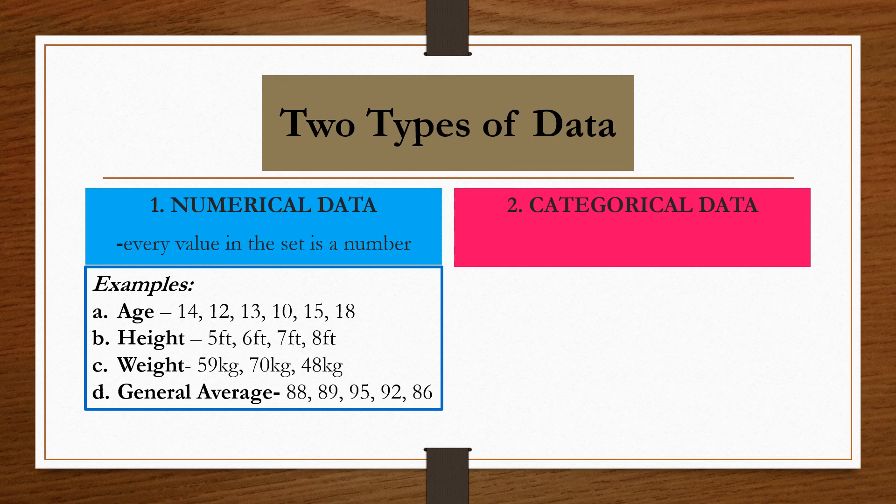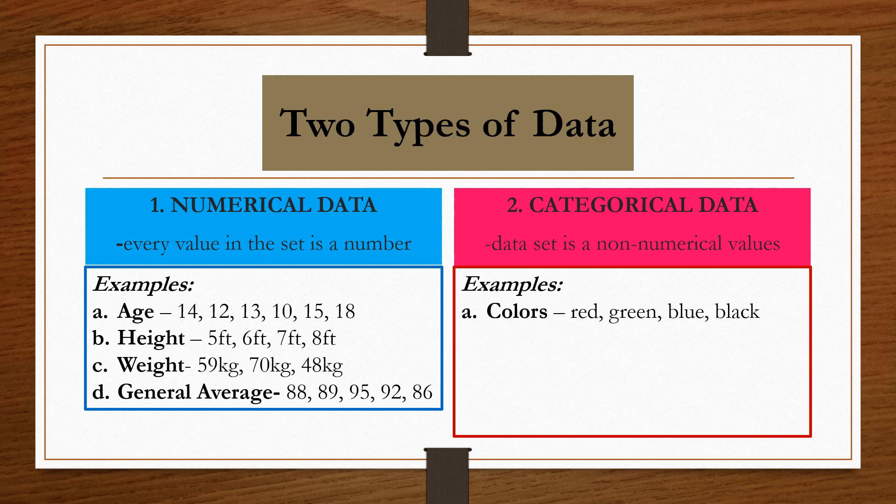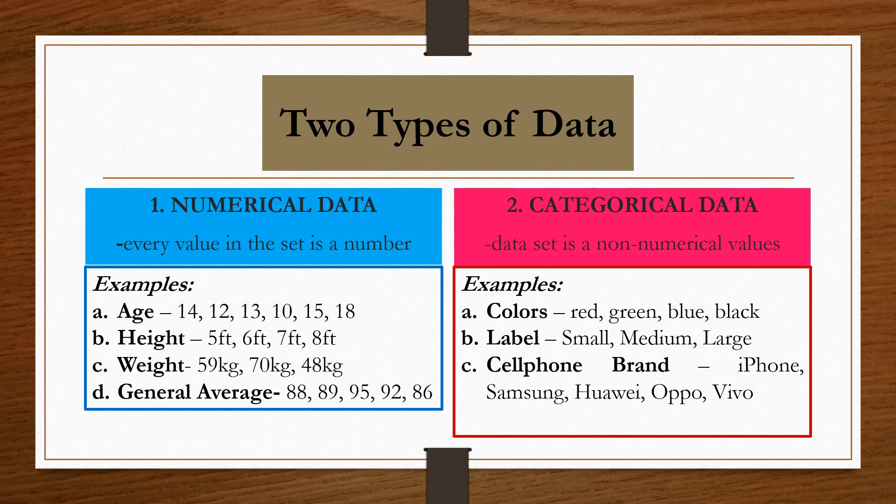The other type of data is categorical data. This data set is non-numerical. For example, we have colors: red, green, blue, and black. We cannot identify colors based on numbers. Another one is labels: small, medium, large, extra large and so on. Another example is cell phone brand: iPhone, Samsung, Huawei, Oppo, or Vivo. And the last one is gender: male or female. So those are the two types of data.